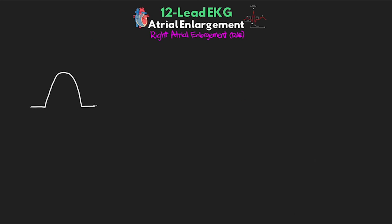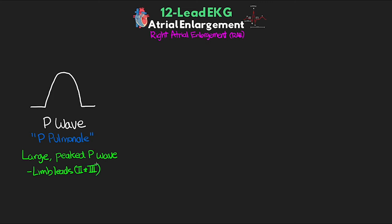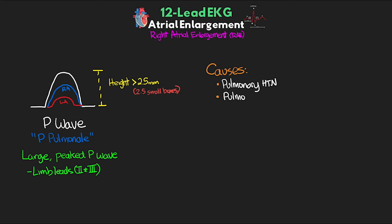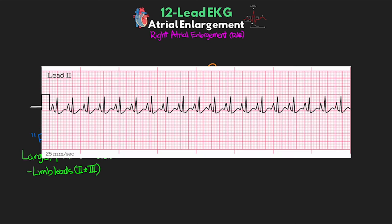Now let's talk about right atrial enlargement, also called P-pulmonale, characterized by a large peaked P-wave. The P-waves are most prominent in limb leads, especially leads two and three. The enlarged right atrium, where conduction begins, is added to the rapidly depolarizing left atrium, giving the appearance of this large P-wave. The criterion is that the P-wave height must be greater than 2.5 millimeters — basically two and a half small boxes. Common causes include pulmonary hypertension, pulmonic stenosis, and tricuspid valve disease, including both tricuspid stenosis and tricuspid regurgitation. Here's a rhythm strip showing the classic peaked P-waves larger than 2.5 millimeters.